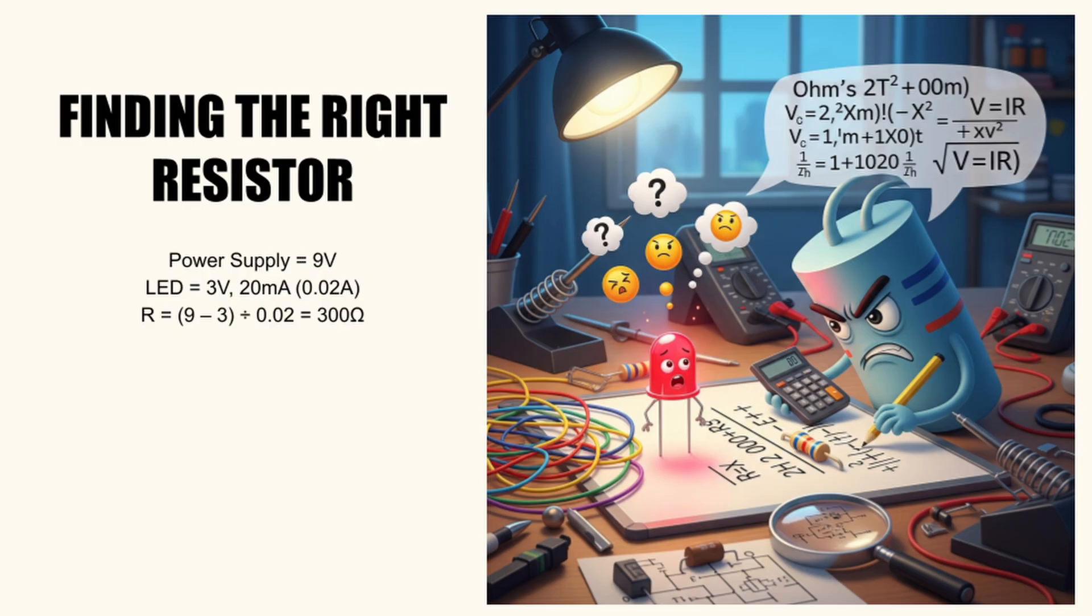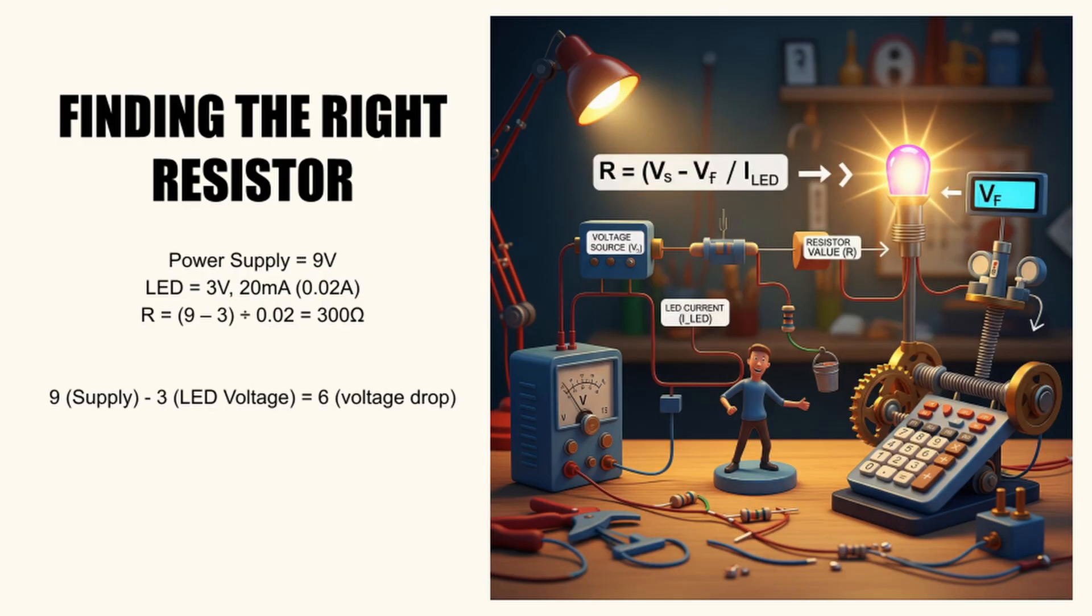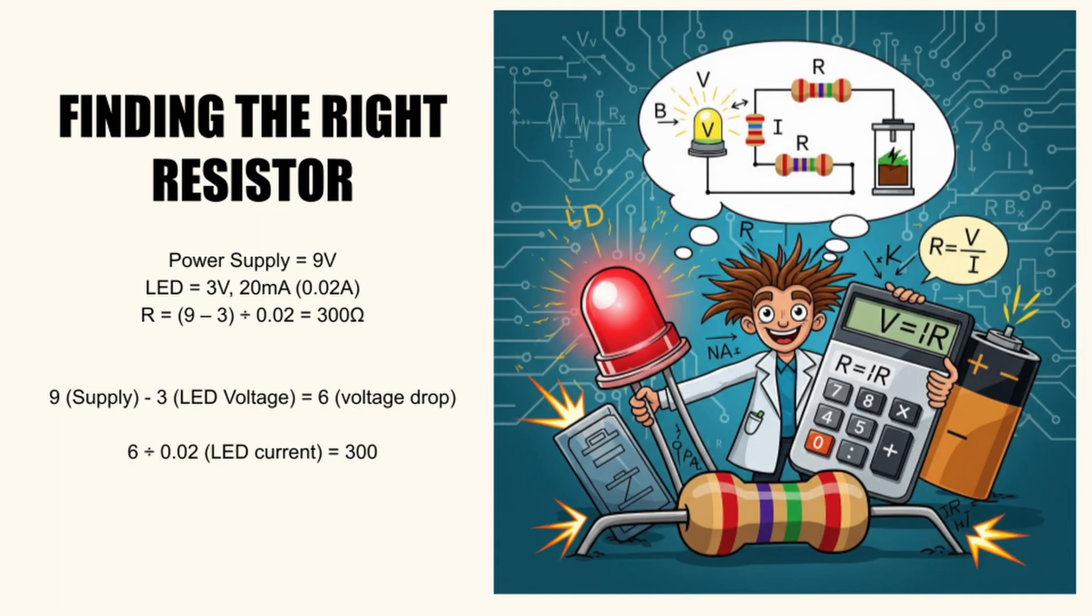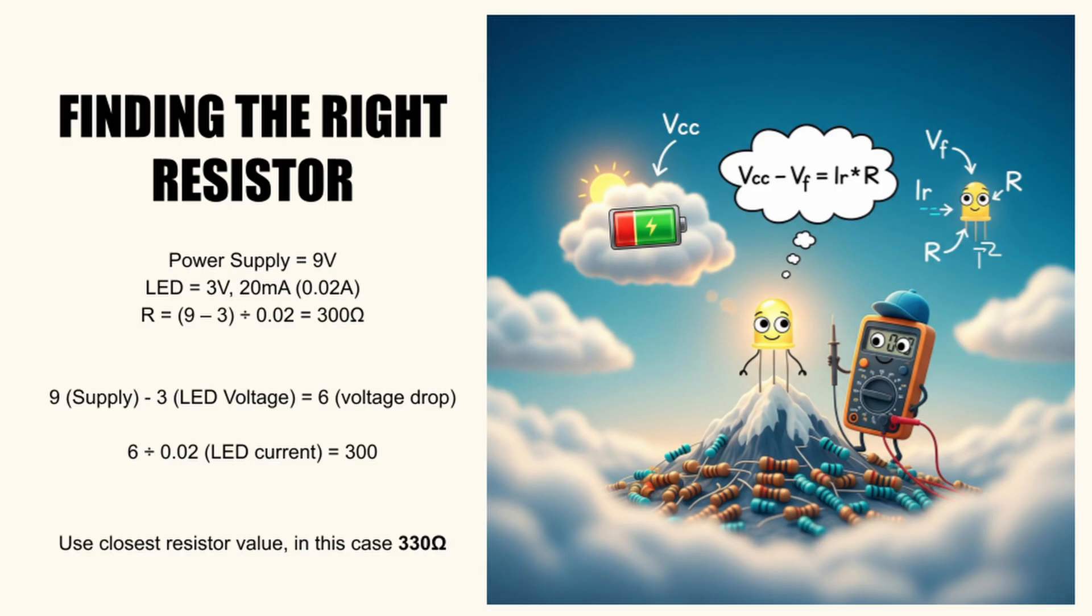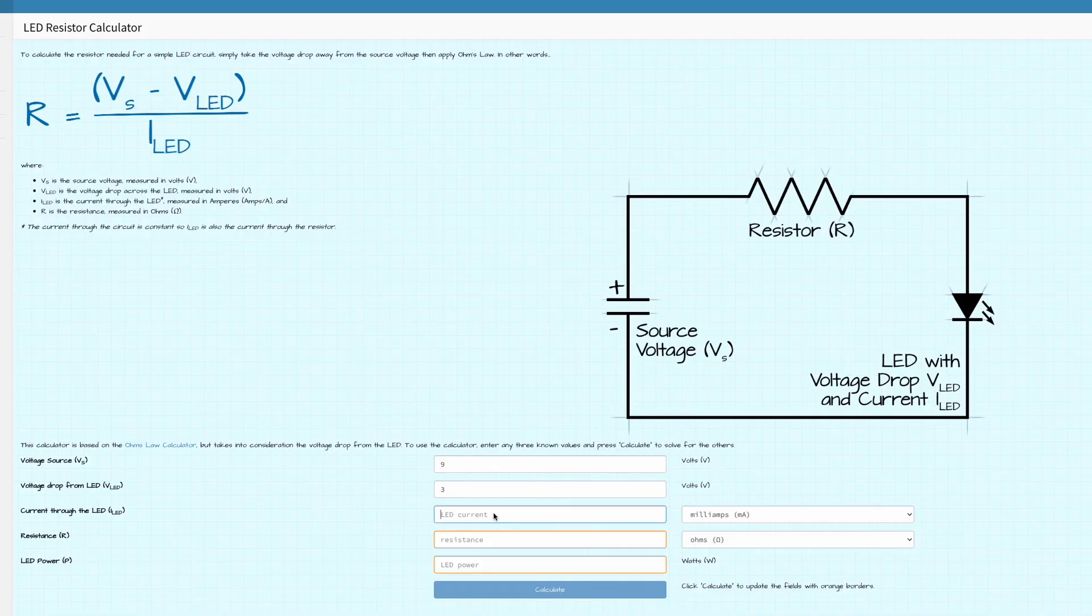Here's how to do it in practice. First all the math, then I'll break it down. Let's say you've got a 9-volt power supply and an LED with a forward voltage of 3 volts. Subtract that. 9 minus 3 equals 6. Next, divide by the current. Most LEDs run at 20 milliamps or 0.02 amps. 6 divided by 0.02 equals 300. Since 300 isn't a standard resistor value, you'd use 330 ohms. The next one up. Done. Your LED is safe and it shines at full brightness.